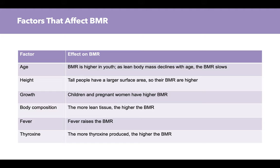The factors that affect BMR include age, height, growth, body composition, fever, and the hormone thyroxin. BMR is higher in youth and slows as lean body mass declines with age. Tall people have a larger surface area, so their BMR is higher. Children and pregnant women have higher BMRs and require more calories relative to their body mass. The more lean tissue or muscle mass somebody has, the greater number of calories they require. Fever raises calorie requirements, and high levels of thyroxin increase the BMR, so thyroid hormone function influences calorie needs.